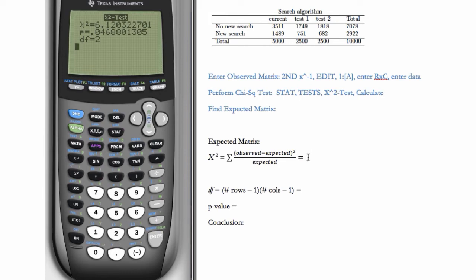So we have a chi-squared value of 6.12. And we have a p-value here of 0.047. And our degrees of freedom is 2. This makes sense because it's number of rows minus 1 times number of columns minus 1. So it's 2 minus 1 times 3 minus 1. So it's 1 times 2 is 2.